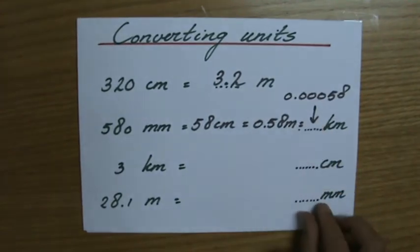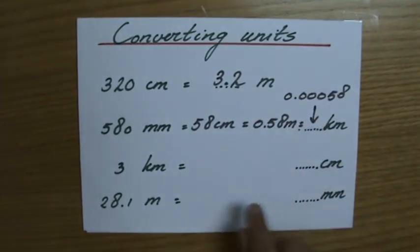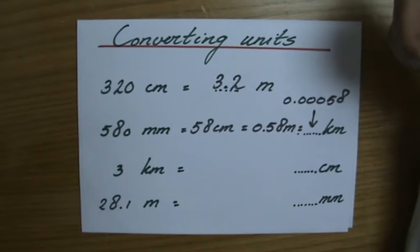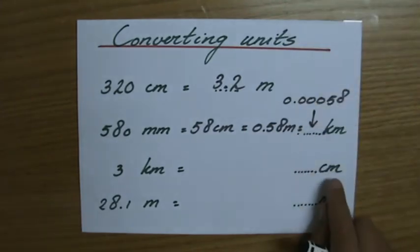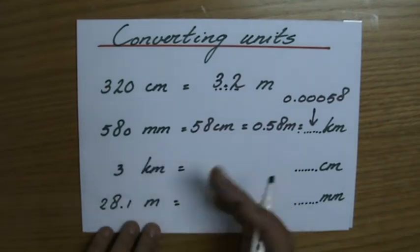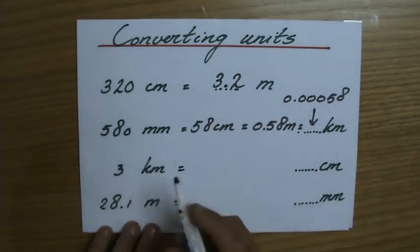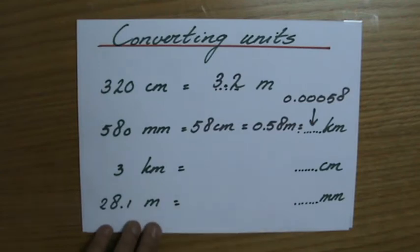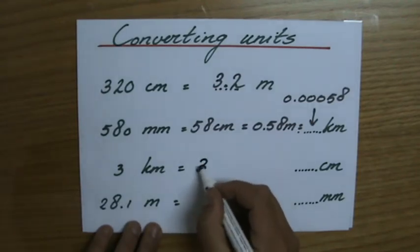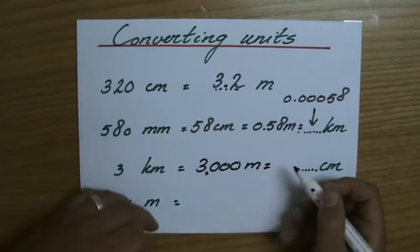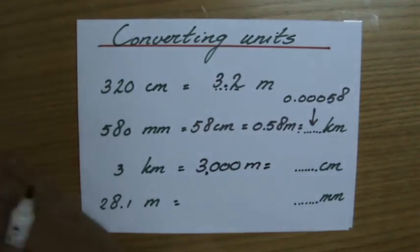Next: 3 kilometers — how many centimeters? Three kilometers is a very large length, so there will be a lot of centimeters. Step by step: go to meters first. There are a thousand meters in one kilometer, so 3 km equals three thousand meters.